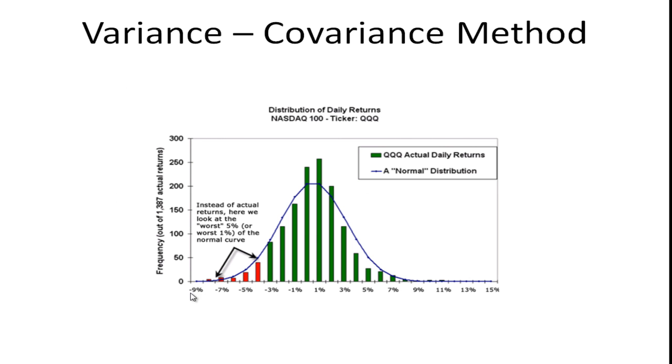Here's this data that we had before in the first graph we looked at and rather than use the data we're going to assume that the data is normally distributed, that's what this line is here. And instead of picking the lowest five percent and seeing what the cutoff is we're going to actually use the statistical information to find it and that's why we get this minus 5.17 percent. So it's pretty close to what we had before. Before we had four percent. This is 5.17.